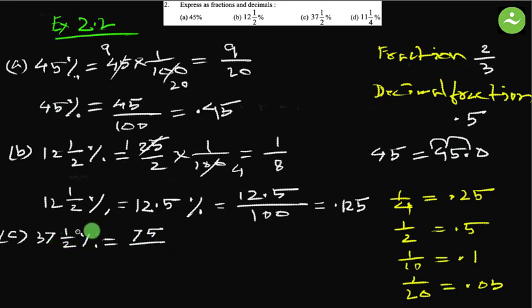We are just converting into improper fraction. 75 by 2 percent means 1 by 100 equals to. Now simplify, divide both by 25. This will be 3 and this will be 4, equals to 3 by 8. So this is the fraction.